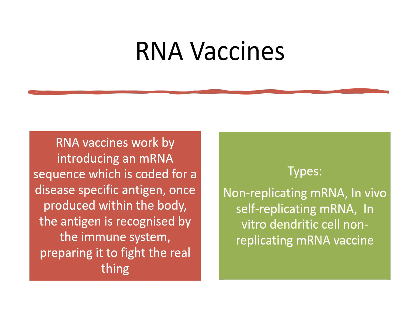We have different types of RNA vaccines available in the market. Three types are: non-replicating mRNA vaccine, in vivo self-replicating mRNA vaccine, and in vitro dendritic cell non-replicating mRNA vaccine. These three types are available based on their potential and different types of action. The best example is the COVID vaccine, which is also a type of mRNA vaccine.